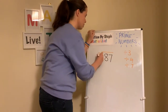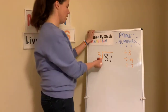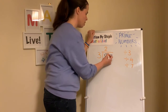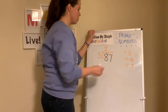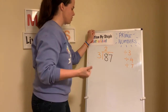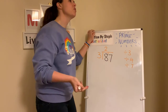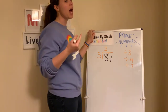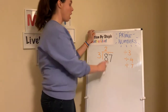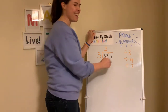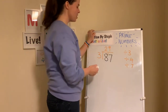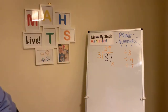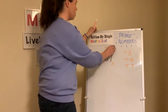So eighty-seven: I'll do bus stop, divide it by three. Three into 8: two remainder two. Three into 27: 9 times 3 is 27. So eighty-seven is not a prime number — it appears in the three times table.